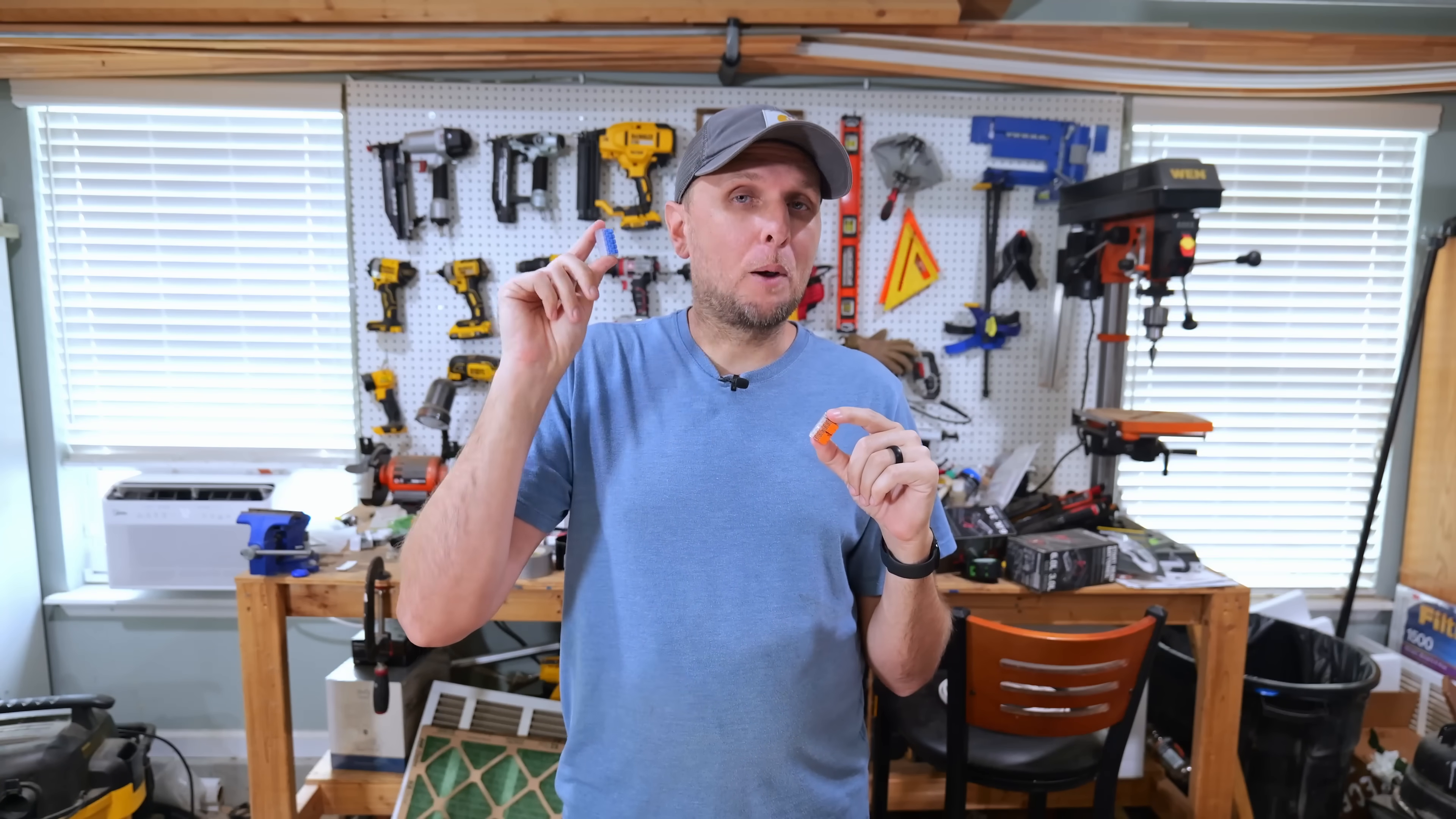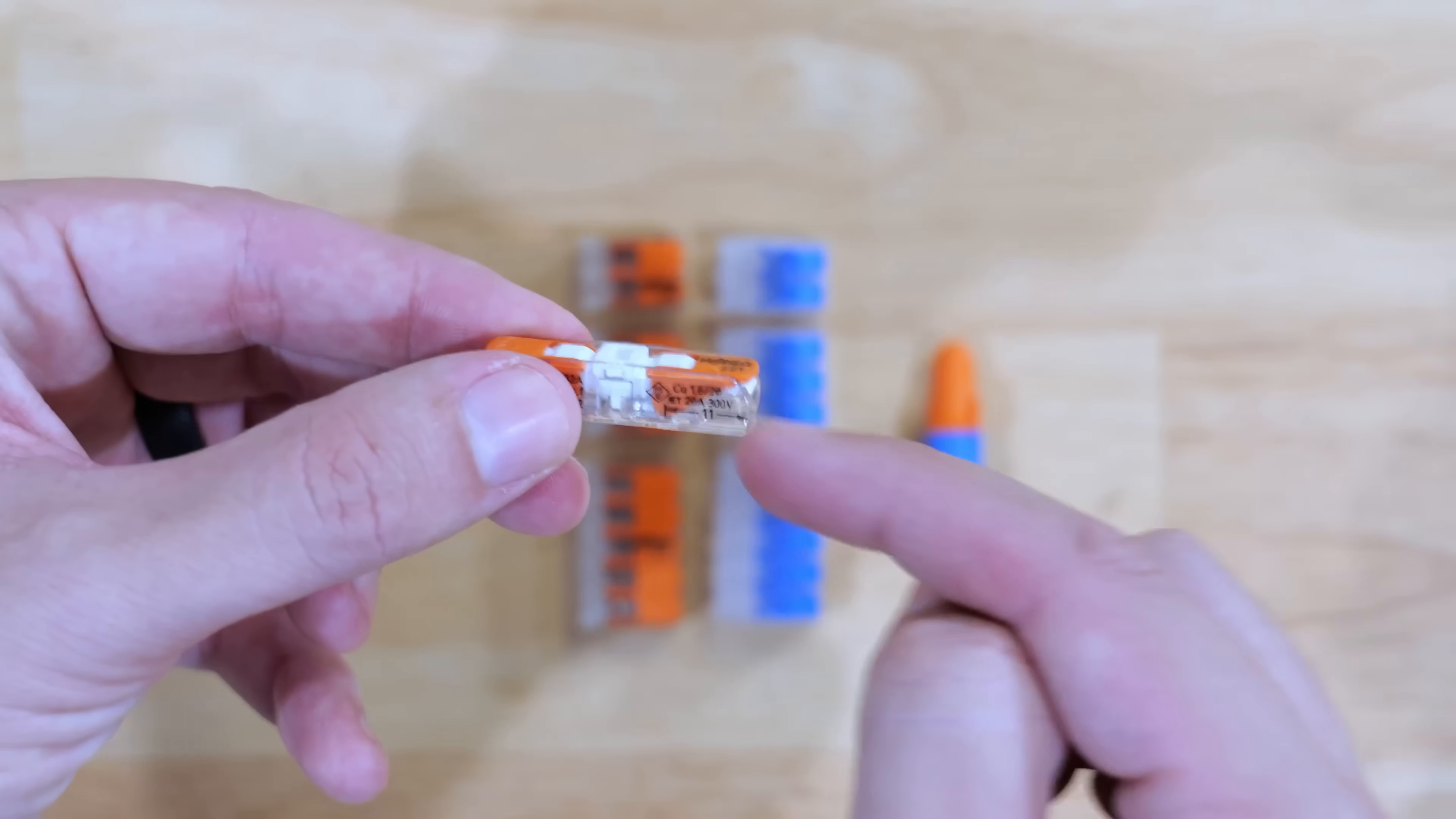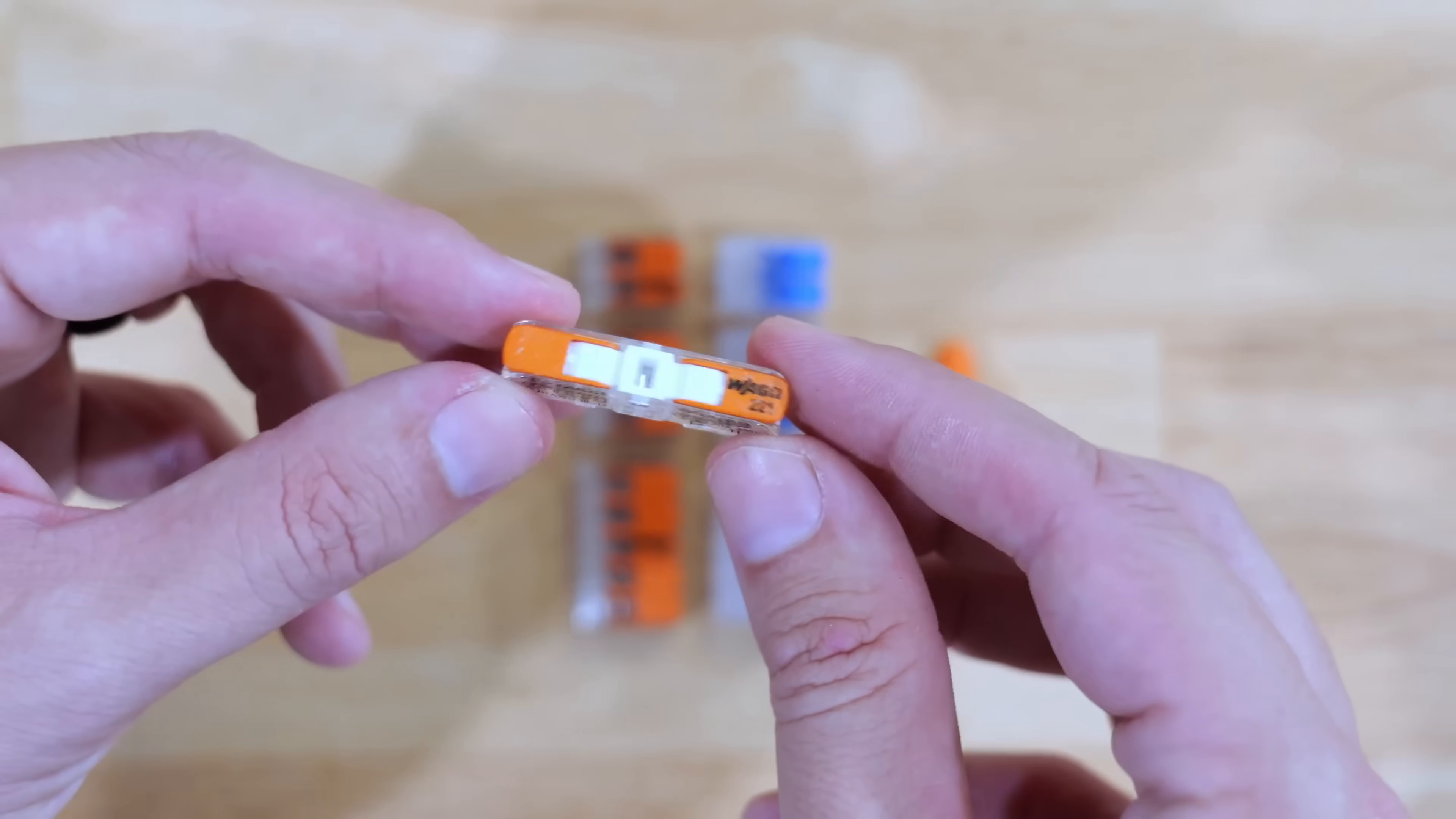I do definitely like some things about the Ideals, but the WAGOs are still quite a bit cheaper. They have a lot more options out there as far as capabilities and sizes of wire. So I guess if you're going to ask me which one I would recommend, I would still recommend going with the WAGOs, but the Ideal definitely makes a good argument.